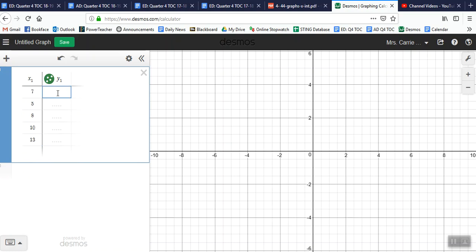And the y values are 15, 19, 14, 18, and 25. So those are the ordered pairs.